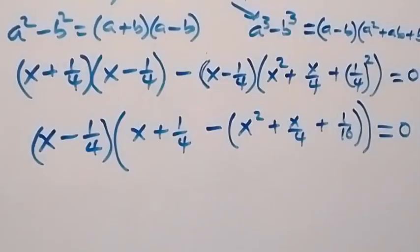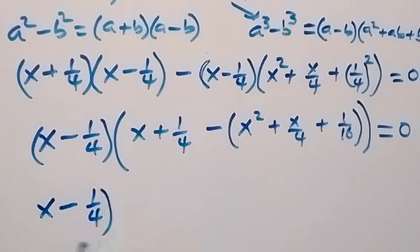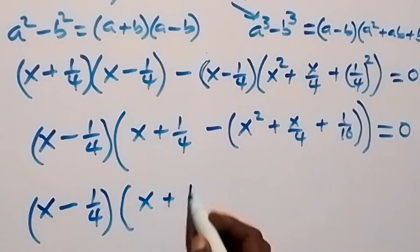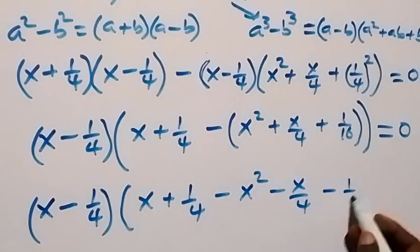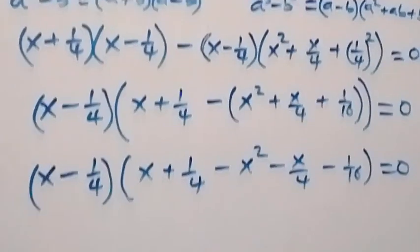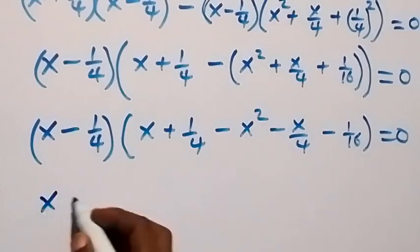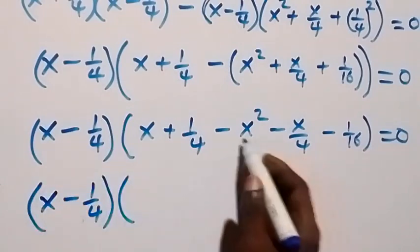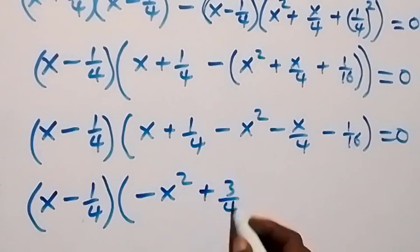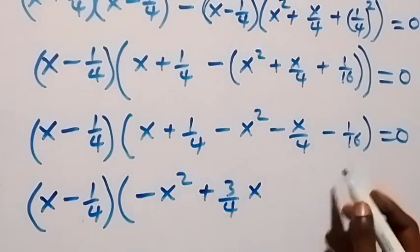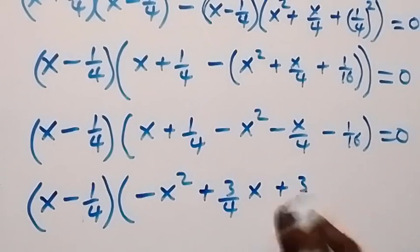We can simplify further by opening the bracket with minus, which gives us x minus 1 over 4, into bracket x plus 1 over 4 minus x squared minus x over 4 minus 1 over 16, close bracket, equals to zero. Arranging and collecting like terms we have x minus 1 over 4, into bracket minus x squared, then x minus x over 4 gives us plus 3 over 4 x, then 1 over 4 minus 1 over 16 gives us plus 3 over 16, close bracket.